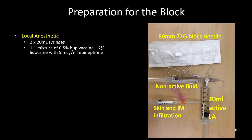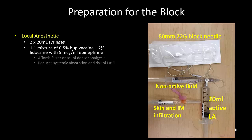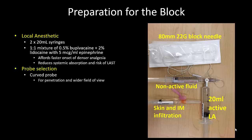Preparation for the block should include the following. Two syringes of a 50-50 mix of lidocaine 2% and bupivacaine 0.5% with 5 micrograms per ml of epinephrine. We use this local anesthetic combination because, in our experience, it provides quicker onset of a more dense sensory loss, although the duration of analgesia may be reduced somewhat. The epinephrine limits systemic absorption and the risk of local anesthetic systemic toxicity. A curved probe is usually indicated in the adult patient for adequate penetration and a wider field of view. As these are single-injection blocks, a 22-gauge, 80-millimeter block needle is appropriate.